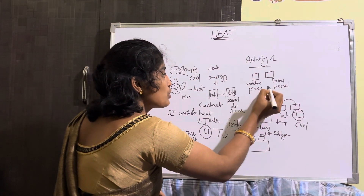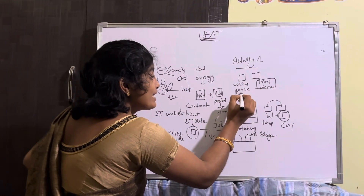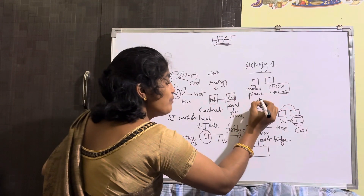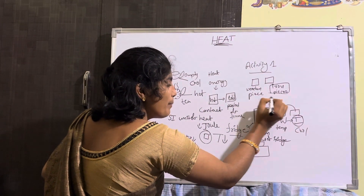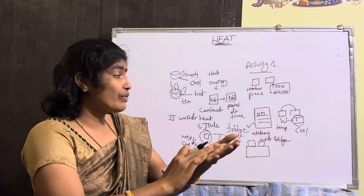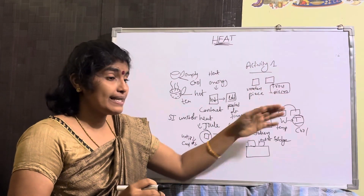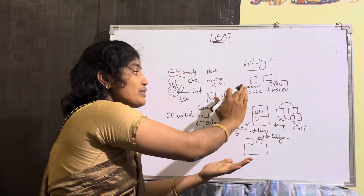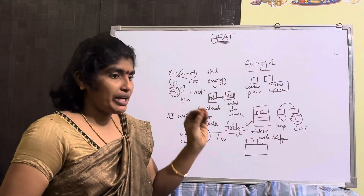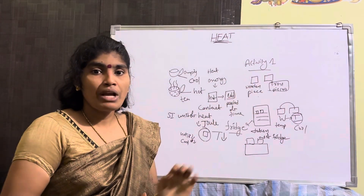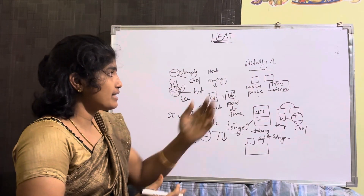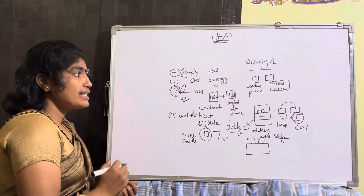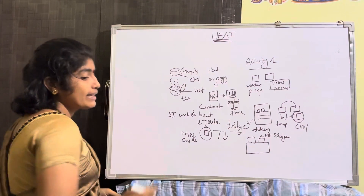From this activity, the iron piece is cool compared to the wooden piece. If you do this activity, you understand the definition of heat. Consider these two materials, touch them individually with your hands. Your hand has a minimum temperature, and that temperature is transferred into the pieces — you identify which is cool and which is hot. That is the definition of heat. This is activity one. Next, the concept is thermal equilibrium.